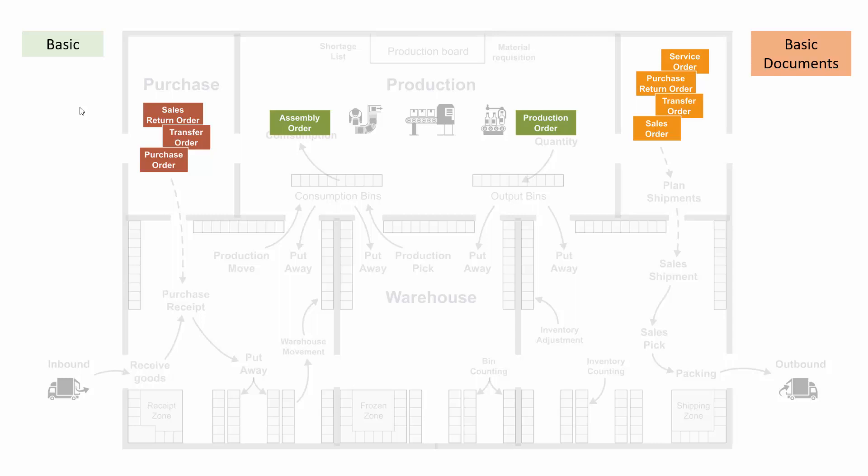On the inbound side, you have a purchase order, a transfer order, and a sales return order. Internally, you have an assembly order and a production order. Be aware that the production order and the service order are part of the premium license in Business Central. Those are basic documents that many customers running basic functionality in Business Central are using.